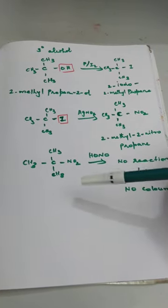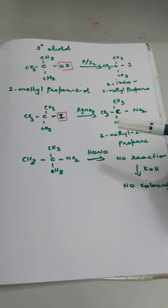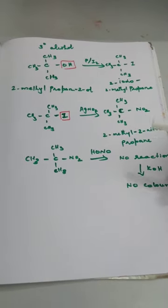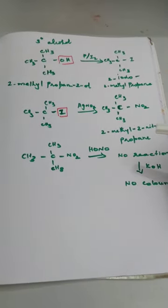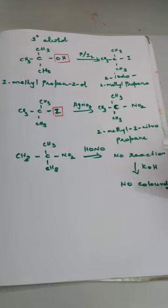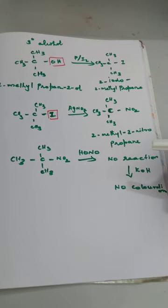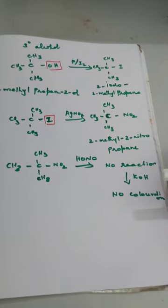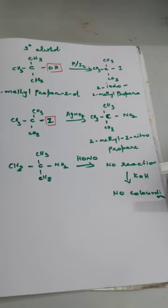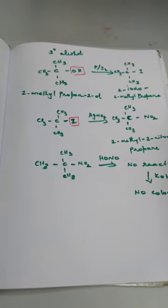In Step 3, 2-methyl-2-nitropropane is treated with nitrous acid, HONO. There is no reaction, because there is no H attached to the carbon bearing the nitro group in a tertiary nitroalkane. When it is then treated with KOH, the solution remains colorless. This colorless result confirms that the original compound was a tertiary alcohol.